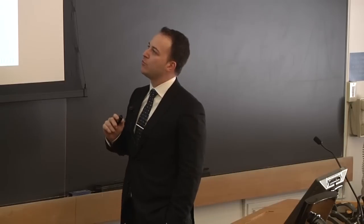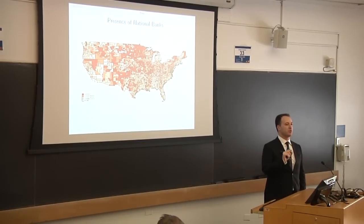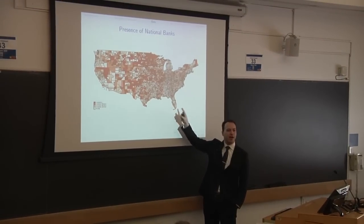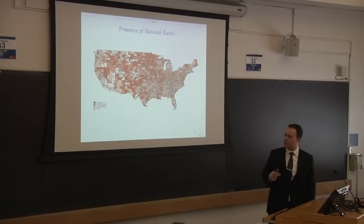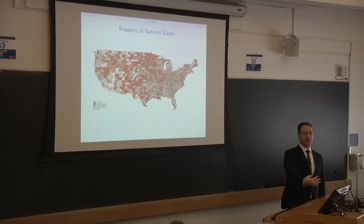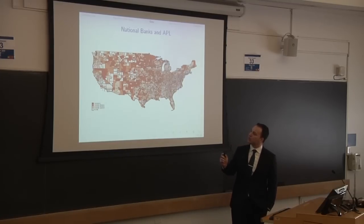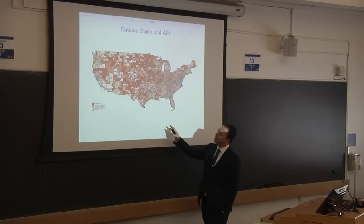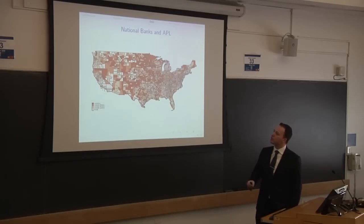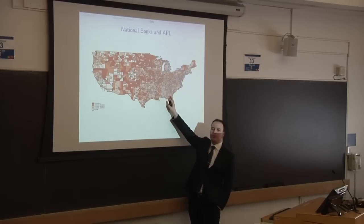So what we are going to do — we show you this map of the US by counties, with different counties having different exposure to national banks. For each county we looked at what fraction of loans is originated by national banks. Darker counties are the ones where national banks are more important, and are the ones where we expect national banks to give credit to risky borrowers — so where we expect the boom and bust cycle to be much more severe. Using also the anti-predatory laws, the blue borders show states with anti-predatory laws, allowing us to compare counties very close to the border in a state without versus a state with anti-predatory laws.